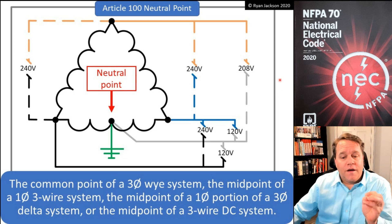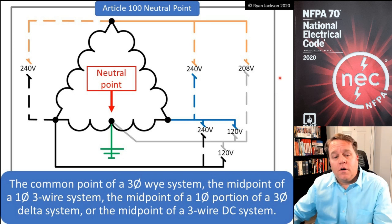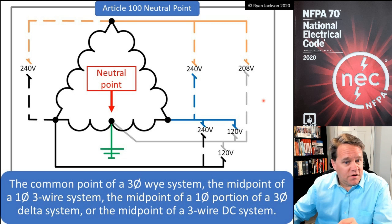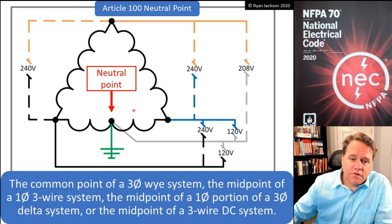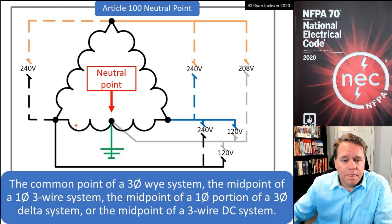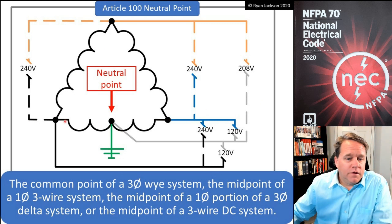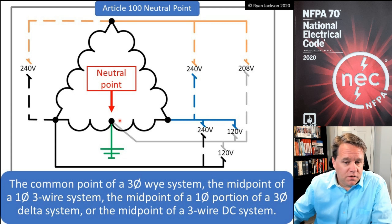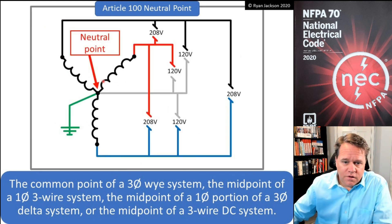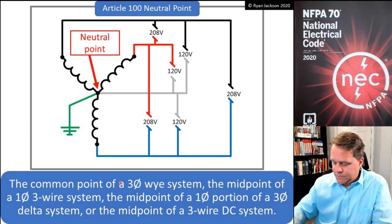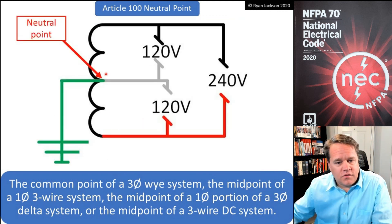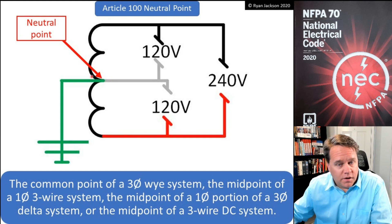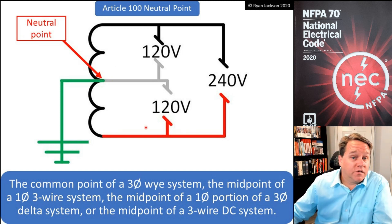We also have a neutral point which is the midpoint of a single-phase portion of a three-phase Delta system. Here on a three-phase Delta, I've picked one of the three phases and connected it to the center — that then becomes our neutral point. So that is a neutral point, and this is a neutral point as well.